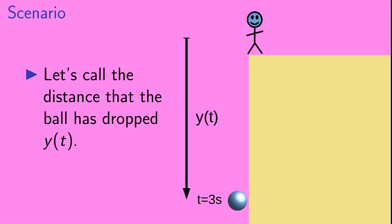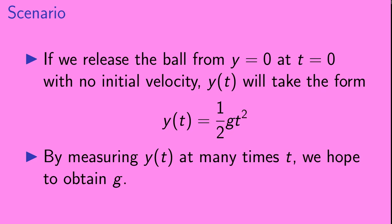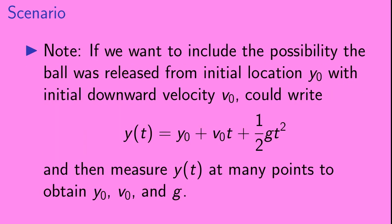So let's call the distance that the ball has dropped y of t. So the farther the ball has dropped, the larger y is. If we release the ball from y equals 0 at t equals 0 with no initial velocity, then y of t will take the following form: y of t is equal to 1 half g t squared. By measuring y of t at many times t, we hope to obtain g. Now we should note that if we want to include the possibility the ball was released from initial location y naught not equal to 0 with initial downward velocity v naught not equal to 0, we could write the more complicated expression y of t is equal to y naught plus v naught t plus 1 half g t squared. And then we could measure y of t at many points to obtain y naught, v naught, and g.